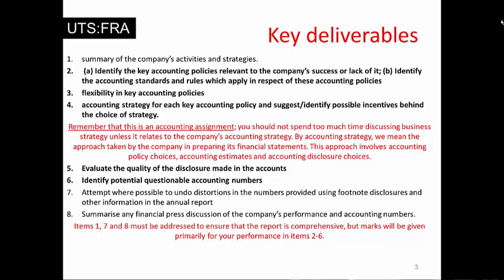It's important that you think about these things together. On this slide, I have made points two, three, four, five, and six bold, and the others non-bold — there's a reason for this. We're going to focus primarily on these, mainly because item one is pretty basic; it's easy to describe what the company's business does. Item seven — undoing distortions — is hard. It's not always possible to work out how numbers are distorted or what the numbers would look like under different accounting choices. If you can do that, great, but we're not expecting it, and it will be hard to be successful there. We're going to focus on two, three, four, five, and six.